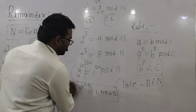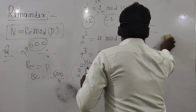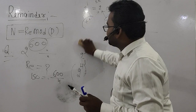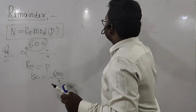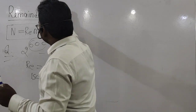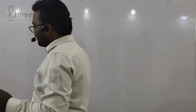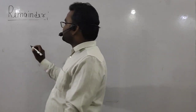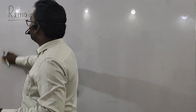Let's see one or two more problems and learn one or two more concepts. That was the simplest concept — remainder questions can be solved very easily using these methods. So far you have seen Rule 1. Now let me show you Rule 2.